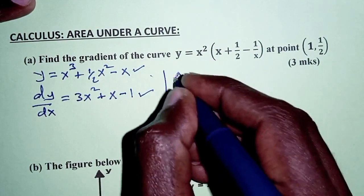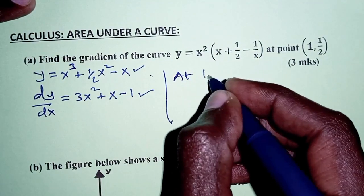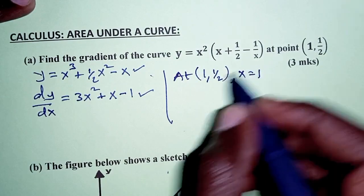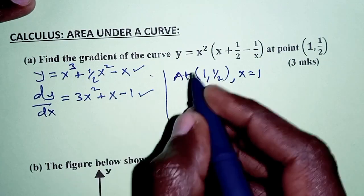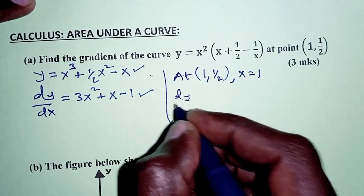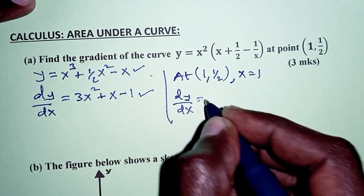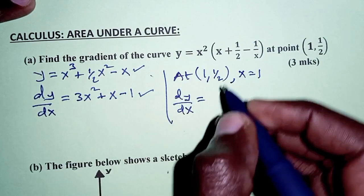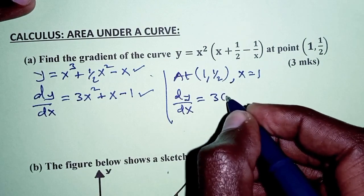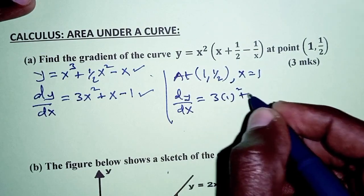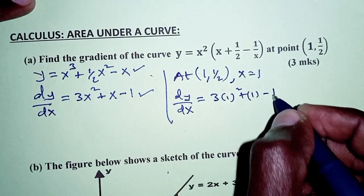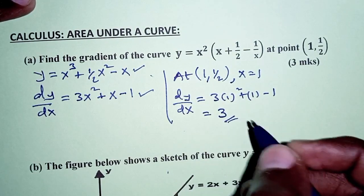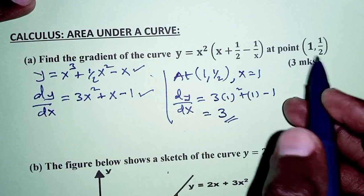So with the gradient function, we can find the gradient at the given point. At the point (1, 1/2), the x-coordinate is 1. Substituting into dy/dx: 3 times 1 squared plus 1 minus 1 equals 3. So the gradient of the curve at the given point is 3.